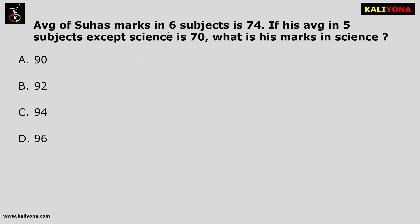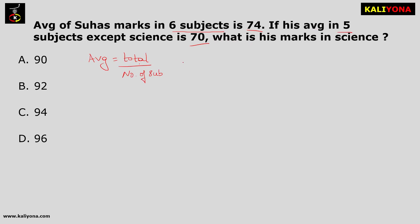In this case, 6 subjects average is 74 and 5 subjects average is 70. So, the remaining subject is 1 — that is science. How average works: it is the total marks divided by the number of subjects.